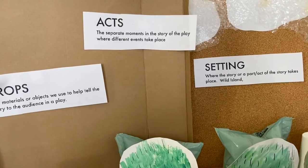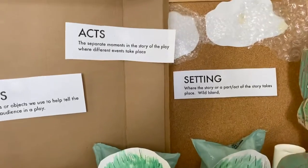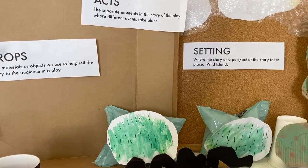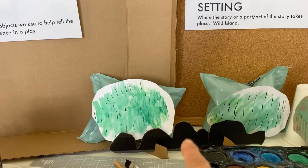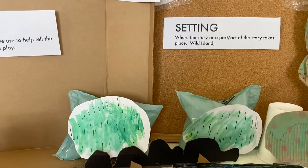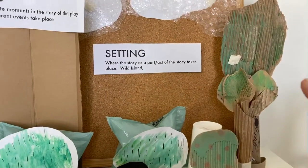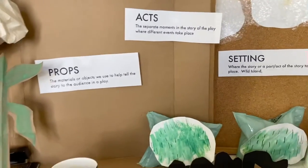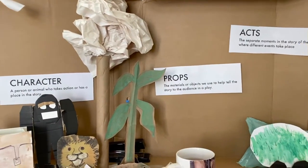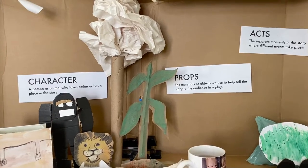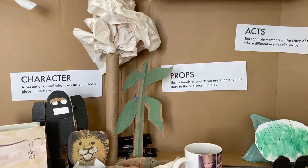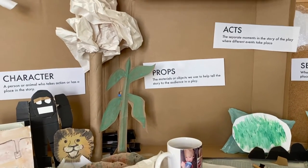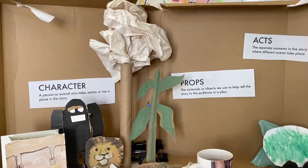The acts are the separate moments in the story of the play where different events take place. Think about how we can show physically how we change from one act to another. I made some rocks that Elmer climbs on to get from the first setting to Wild Island, and I'm going to put some tangerines on the tree. Friends suggested making Wild Island green and leafy with vines, ferns, and palm trees from the story.